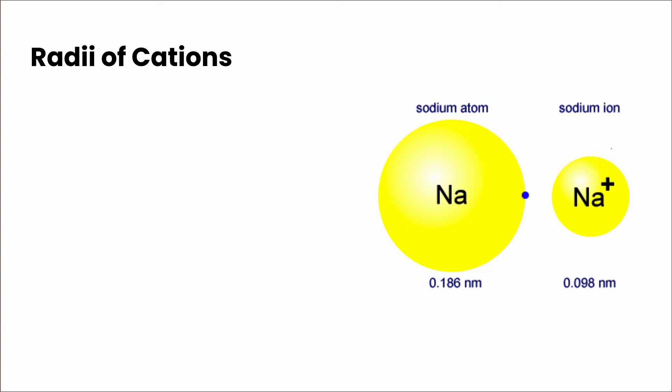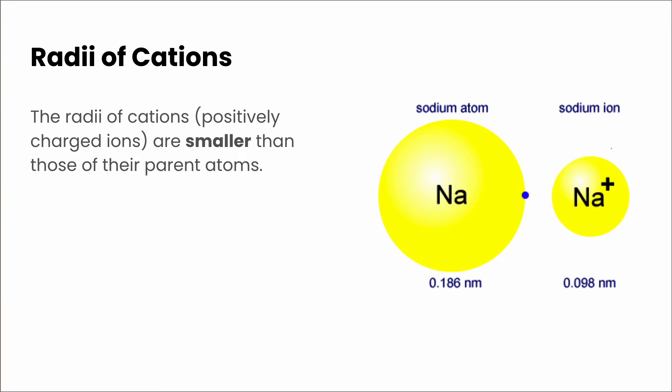For cations, the radii of cations, so these are our positively charged ions, are always smaller than those of the parent atoms. So if we look at sodium, it's got an atomic radius of 0.186 nanometers, and if we look at the ionic radius of sodium, it's 0.098.